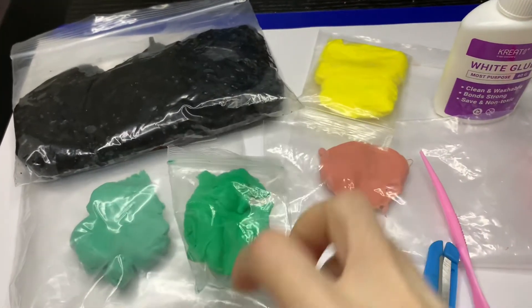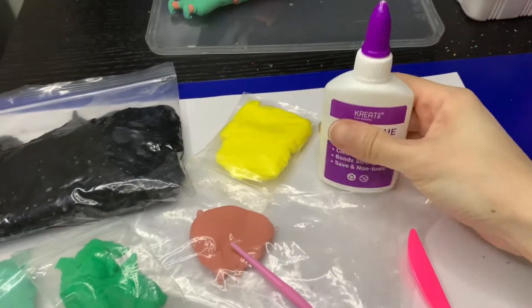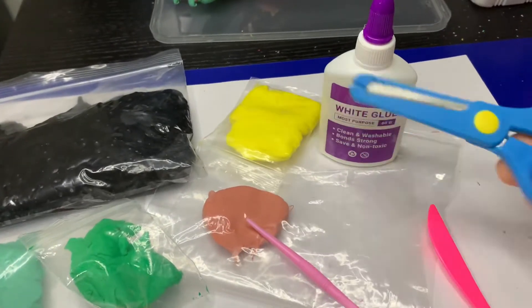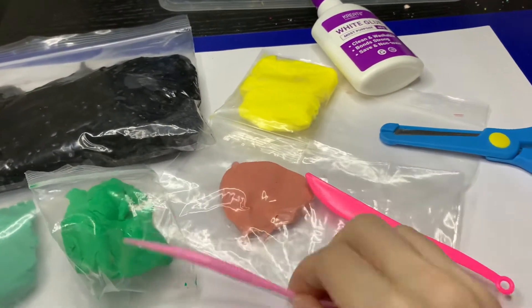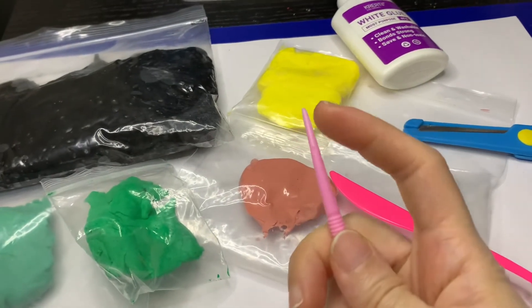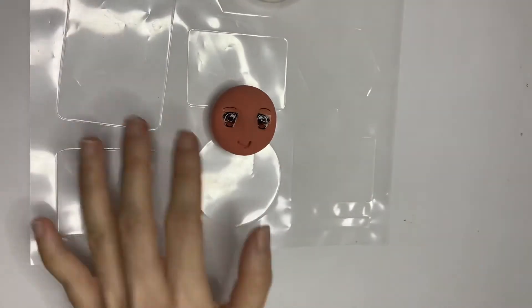We will need five colors: black, green, darker green, yellow, and a tan skin color for the princess. For the tools, we will need a plastic knife, a long sharp edge tool, some glue, and a scissor.